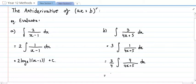And so I can say that this is three quarters at the front of log e of the modulus of four x plus five. And then we always have to have that plus c on the end. And that's it.